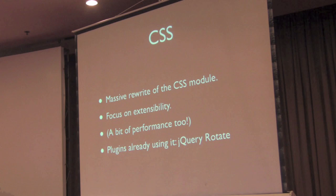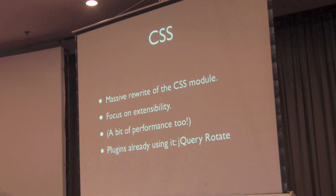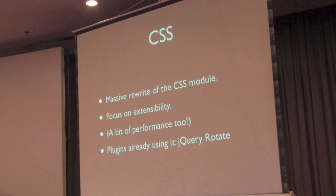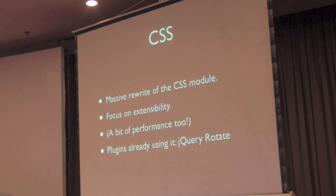One of the big pieces of jQuery that got changed in jQuery 1.4.3 was the CSS module. This module was responsible for all the different CSS-related things that happened in jQuery. In this rewrite, we wanted to make sure that the module became much more extensible, so that people could write plugins that could extend what happens in jQuery and add in whole new CSS features. When we did this, we also got a bit of a performance improvement as well.